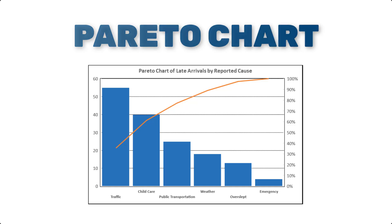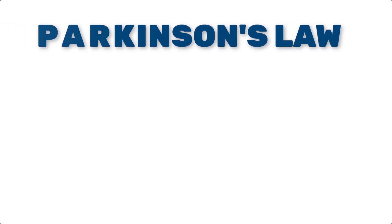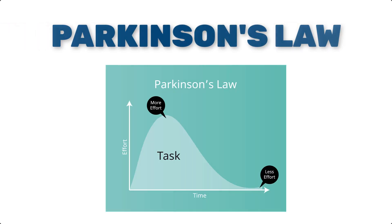This chart is particularly useful in quality management and problem solving, helping you prioritize efforts for maximum impact. Another insightful tool is the Parkinson's Law chart. Parkinson's Law states that work expands to fill the time available for its completion. By visualizing this with a chart, project managers can better understand how time management affects productivity and can implement strategies to prevent projects from dragging on longer than necessary.